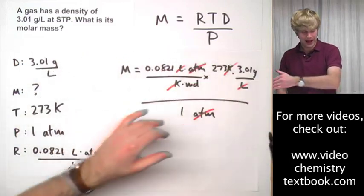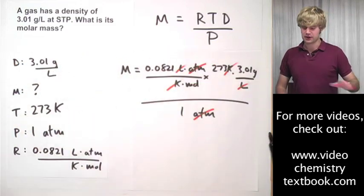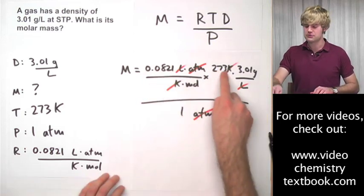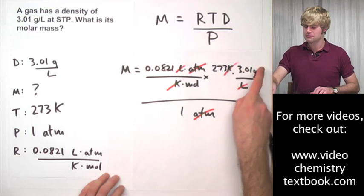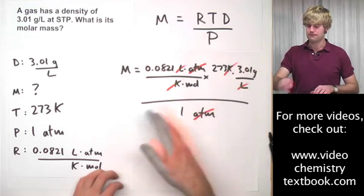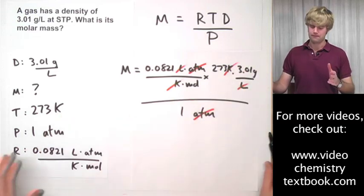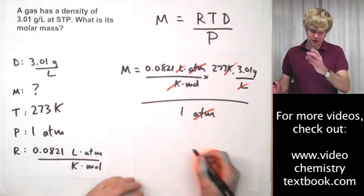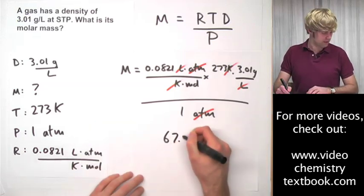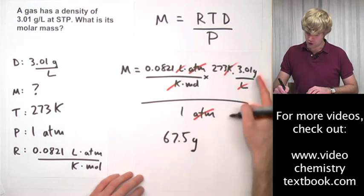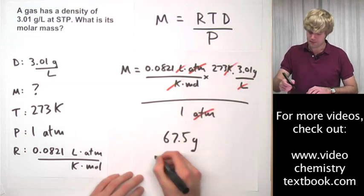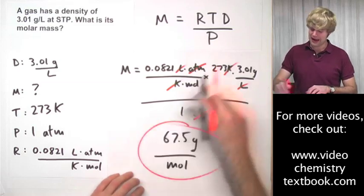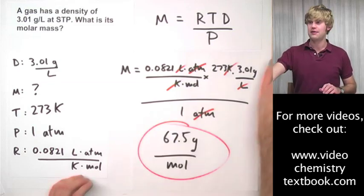So anyway, I go through, plug this into my calculator. The math that I'm going to do is 0.0821 times 273 times 3.01, all of that divided by one. And rounded to three significant figures, I'm going to get 67.5 grams per mole. And that's how I solve for molar mass using density and the ideal gas law.